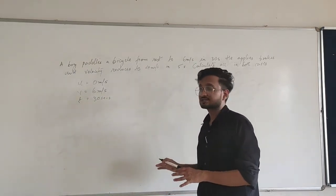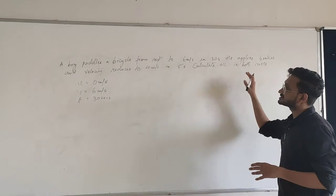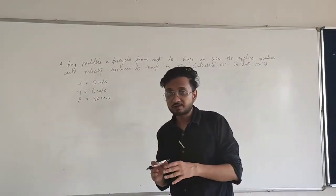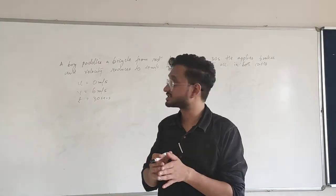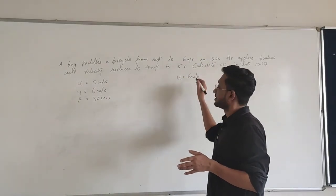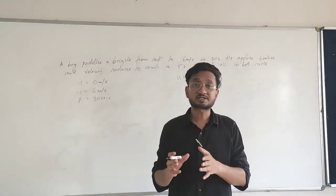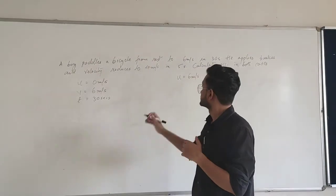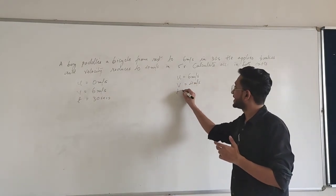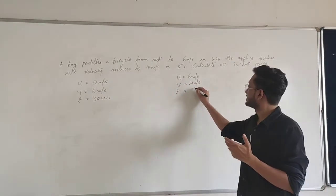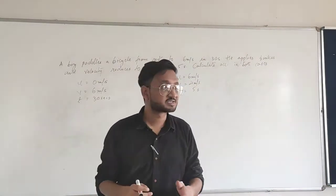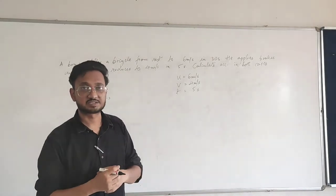That is the first part. The second part states that the cyclist then applies the brakes and the velocity is reduced to 4 meters per second. So now the initial velocity is 6 meters per second, but after applying the brakes the final velocity becomes 4 meters per second, and the time taken to reduce this velocity was 5 seconds. The question asks us to calculate the acceleration for both cases.